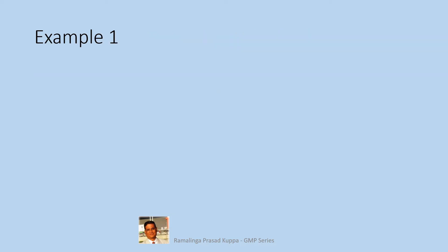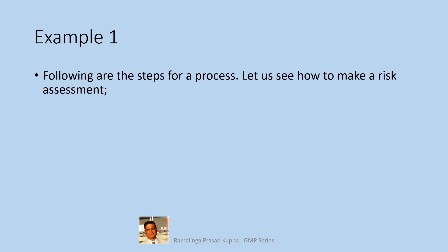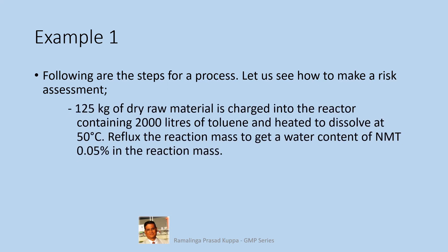Let us see a typical example. Following are the steps for a process — let us see how to make a risk assessment. 125 kilos of dry raw material is charged into the reactor containing 2000 liters of toluene and heated to dissolve at 50 degrees Celsius.